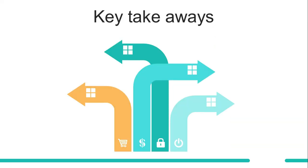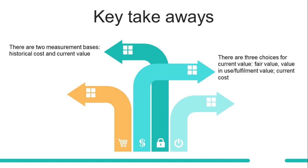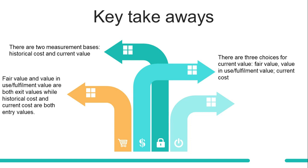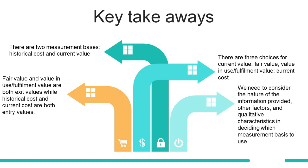Here are our key takeaways for this video. There are two measurement bases: historical cost and current value. There are three choices for current value: fair value, value in use or fulfillment value, and current cost. Fair value and value in use or fulfillment value are both exit values, while historical cost and current cost are both entry values. We need to consider the nature of the information provided, other factors, and qualitative characteristics — including fundamental and enhancing qualitative characteristics — in deciding which measurement basis to use.